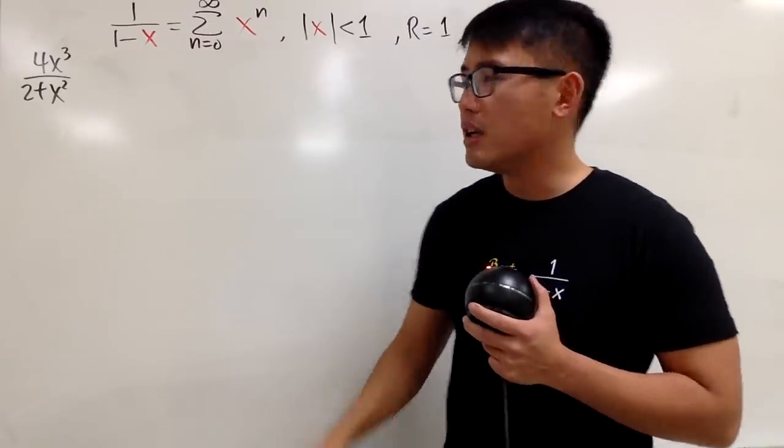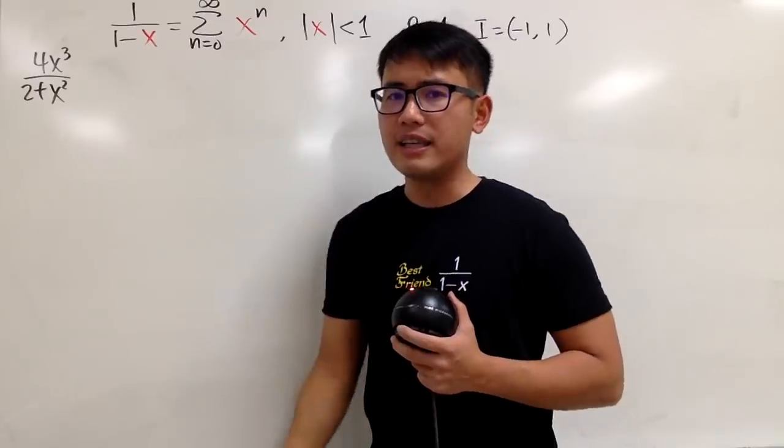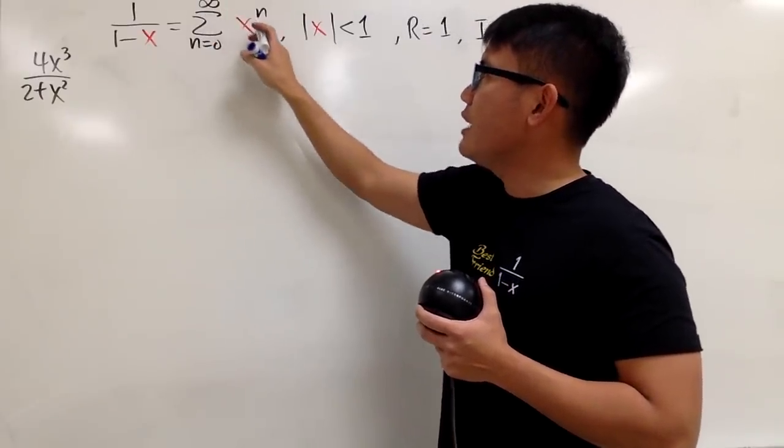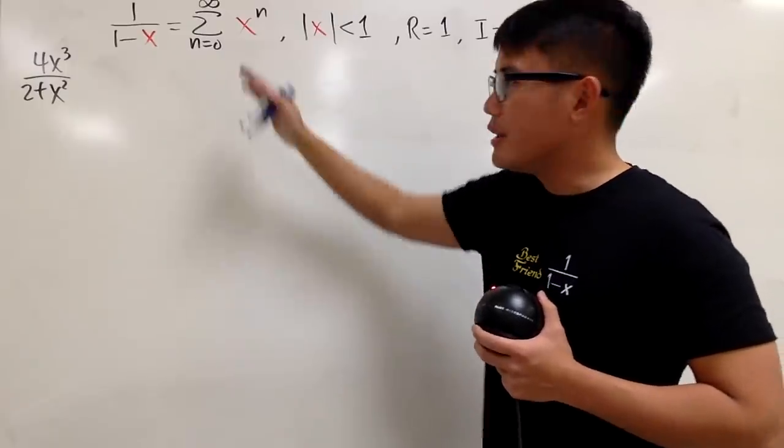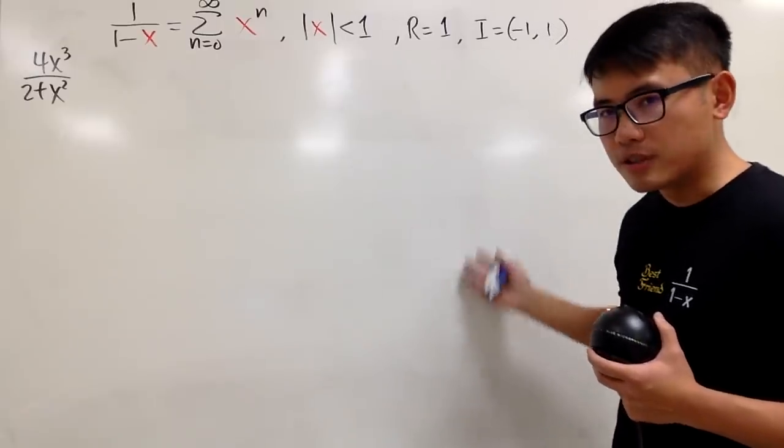And let me just go over the best friend with you guys. You have to know that our best friend is 1 over 1 minus x. And another way to write it is the series as n goes from 0 to infinity, x to the nth power. You can also write it down as the expanded form: 1 plus x plus x squared plus x to the power and so on.